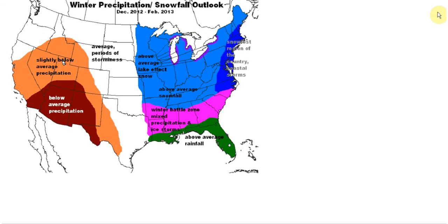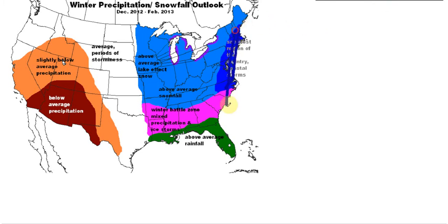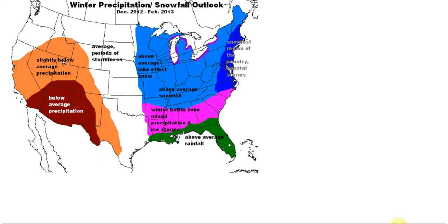Here is the winter precipitation outlook. I believe this particular portion — the east coast, the major cities, the I-95 corridor — will be the snowiest region of the country. We will have a winter battle zone shown in pink where we'll see ice storms, possibly mixed precipitation. Above average snowfall is expected through these regions — not well above average but definitely above average. And of course this region will be where we see the heart of the snowfall, with around to below average snowfall in other areas.